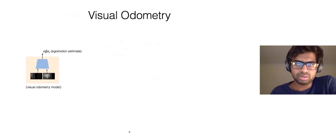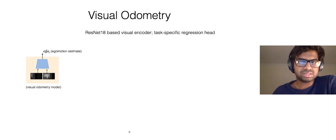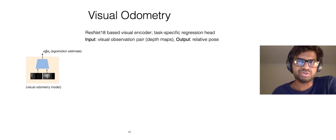Let's take a closer look at the visual odometry module. Our odometer comprises a ResNet-18-based visual encoder that's followed by a task-specific regression head. The model takes a pair of visual observations, in our case depth maps, as inputs and regresses to the relative pose change between the two agent states defined by the input observations.